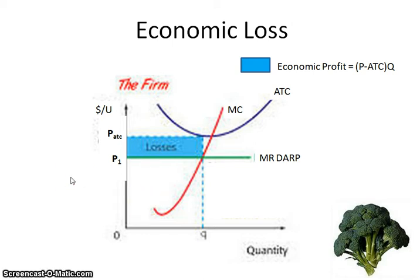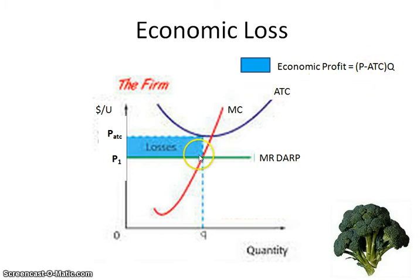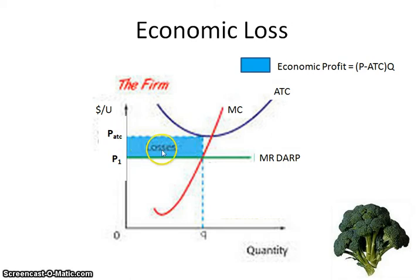Whenever you're calculating the economic profit or the economic loss, you're using the formula price minus ATC times quantity, and you are multiplying this distance by it in order to figure out the area — the rectangle that shows where the economic loss is.